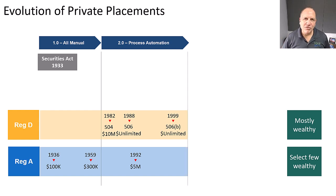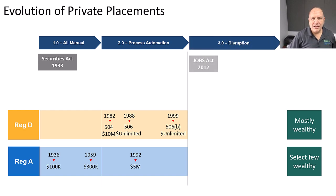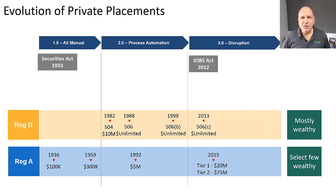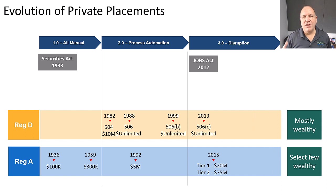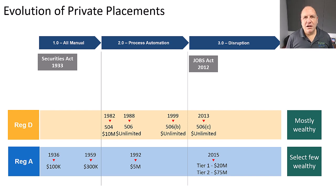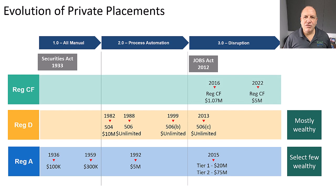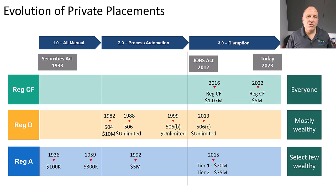Private Placements 3.0 is where we're at today. The Jobs Act of 2012 enhanced the Securities Act of 1933 and further expanded some of the rules in a couple of specific ways. First of all, it created a new exemption called Reg CF, and under Reg CF today you can raise up to $5 million.